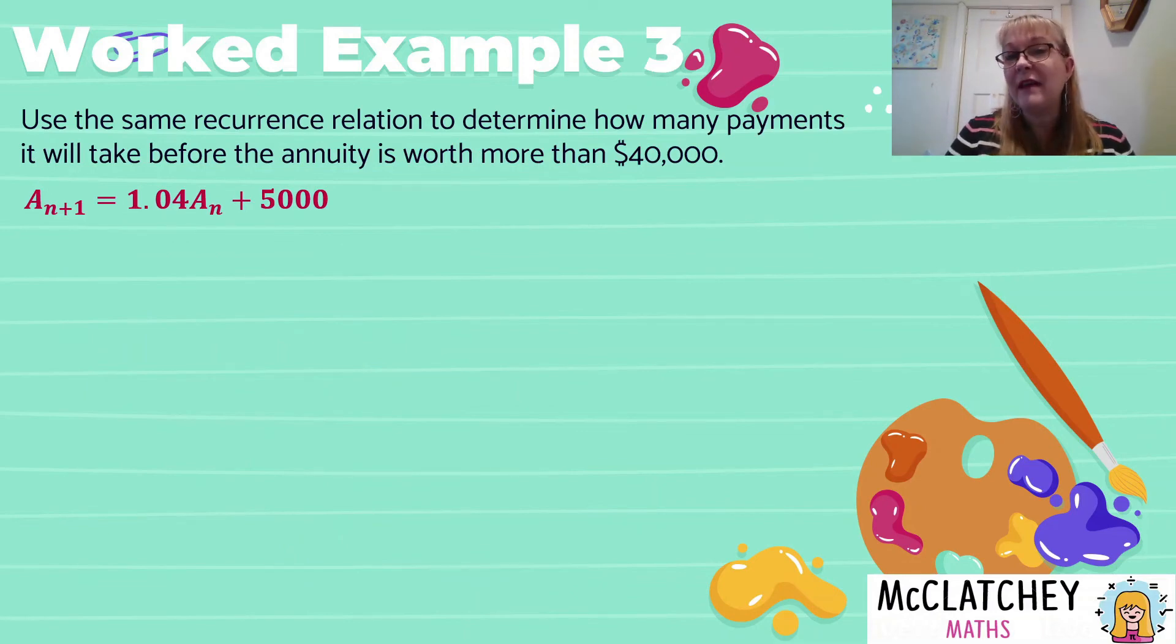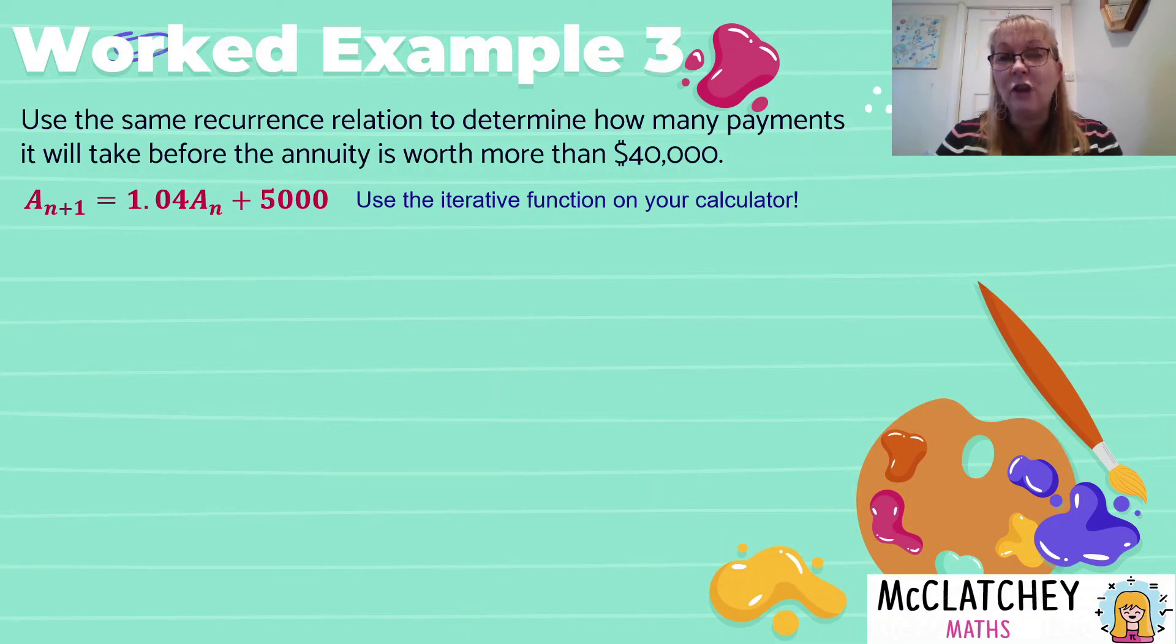And we know that from what happens with an annuity, that it doesn't incur interest in the first period. So that's why the value of A zero was zero. Okay, now this $5,000 moves into the second period now. And it's going to come into the formula and replace A N and become the value from A one will give us the value for A two. So we multiply that 5,000 by 1.04. And then we add $5,000 at the end. You'll notice that only the first 5,000 is going to attract interest, the second 5,000 will not.